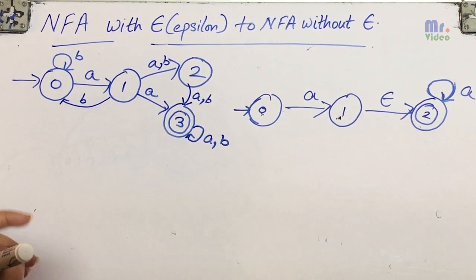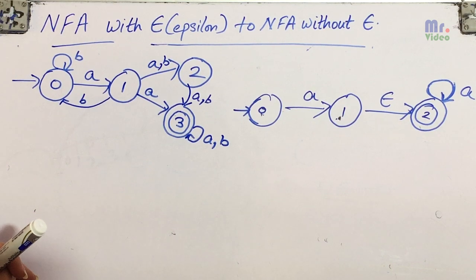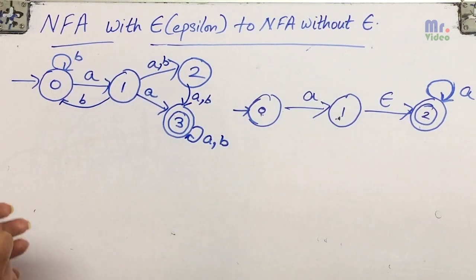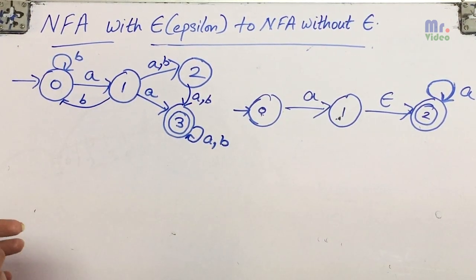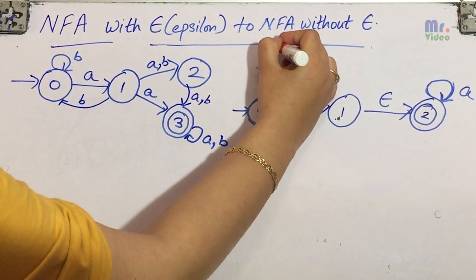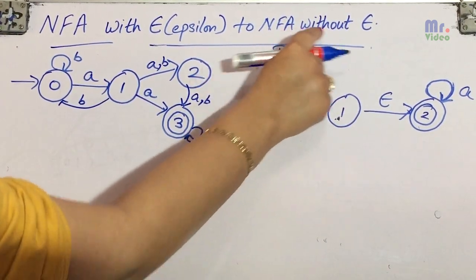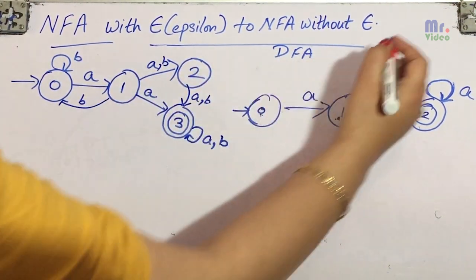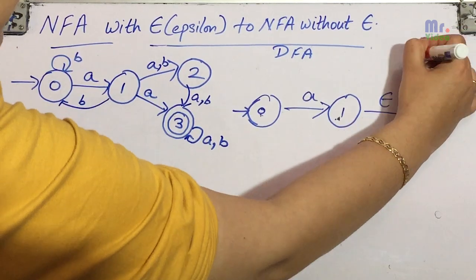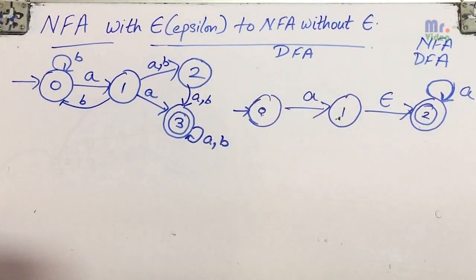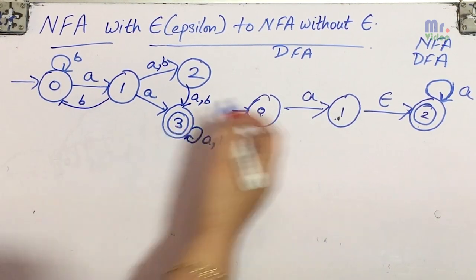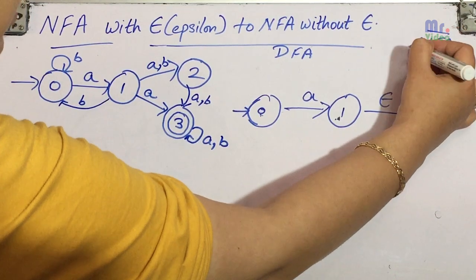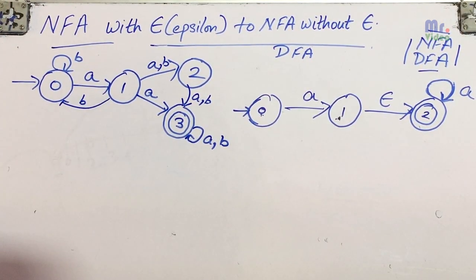Today I am going to discuss the topic: NFA with epsilon to NFA without epsilon. This topic basically covers how to convert an NFA with epsilon moves directly to a DFA, or we can say to an NFA without epsilon. Before discussing this topic, you should be aware of what is NFA and what is DFA. For more detail on the difference between these two terms, kindly refer to my previous lecture.